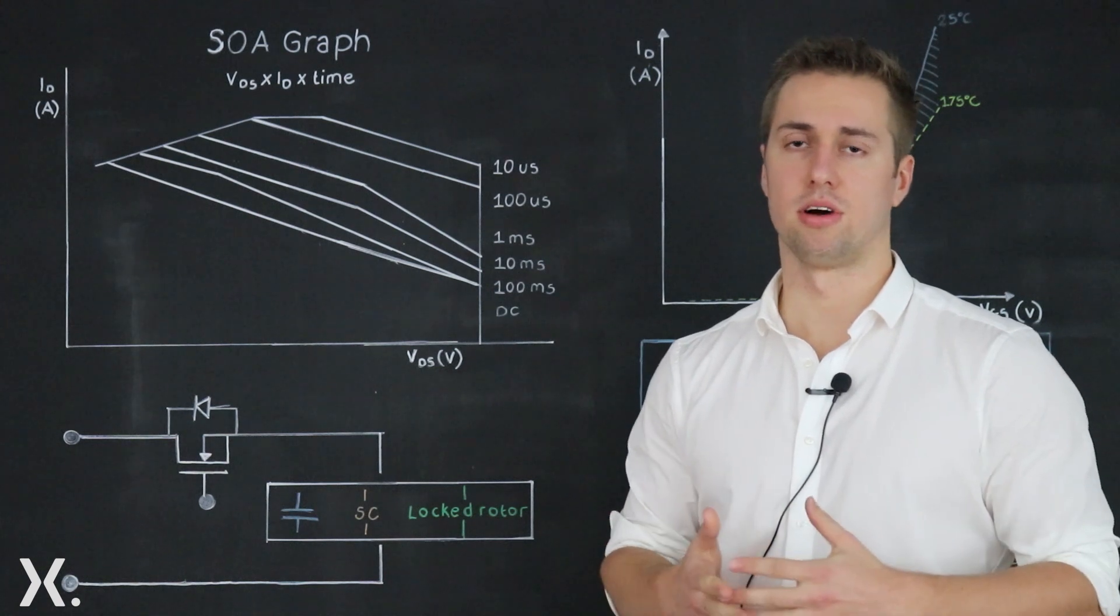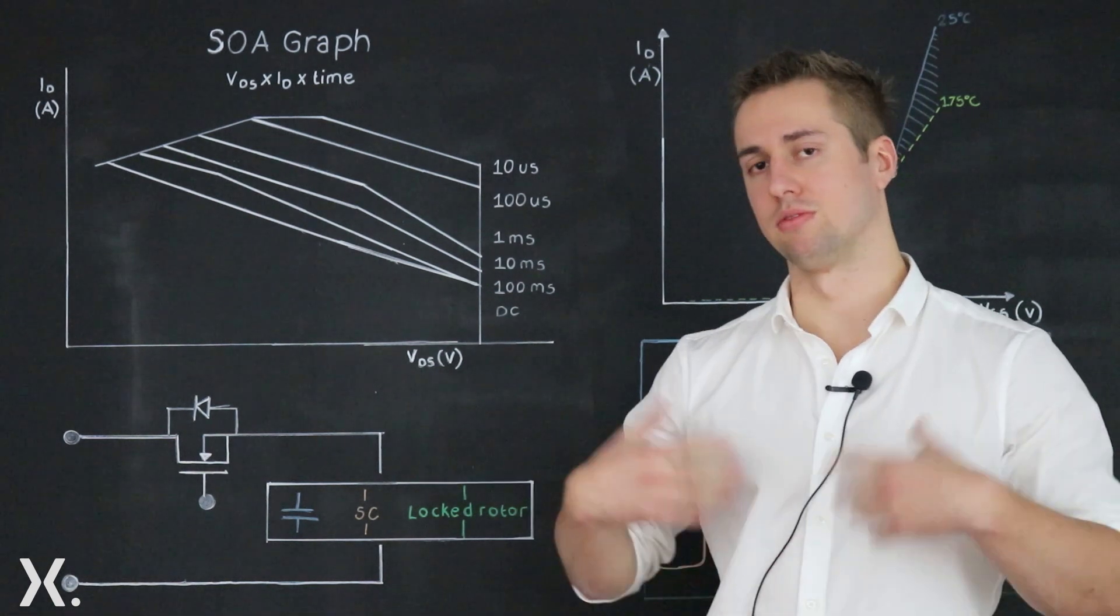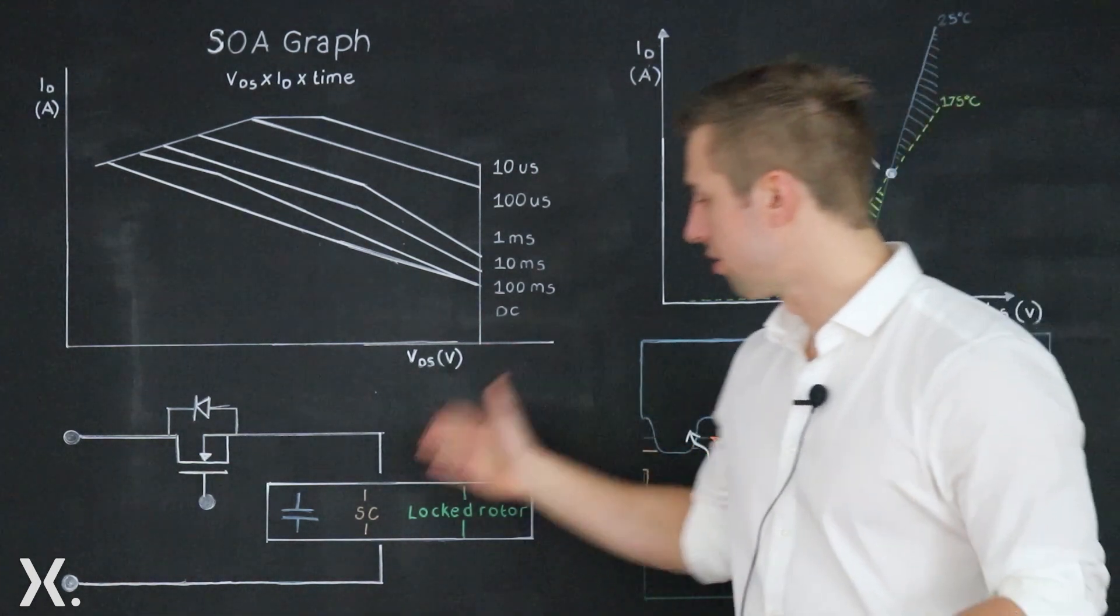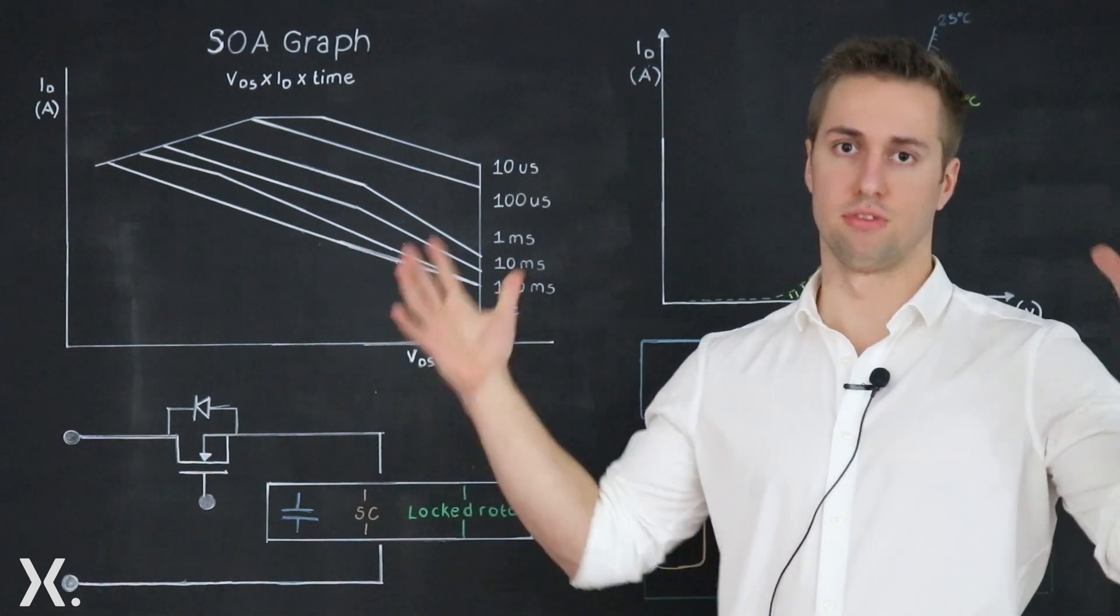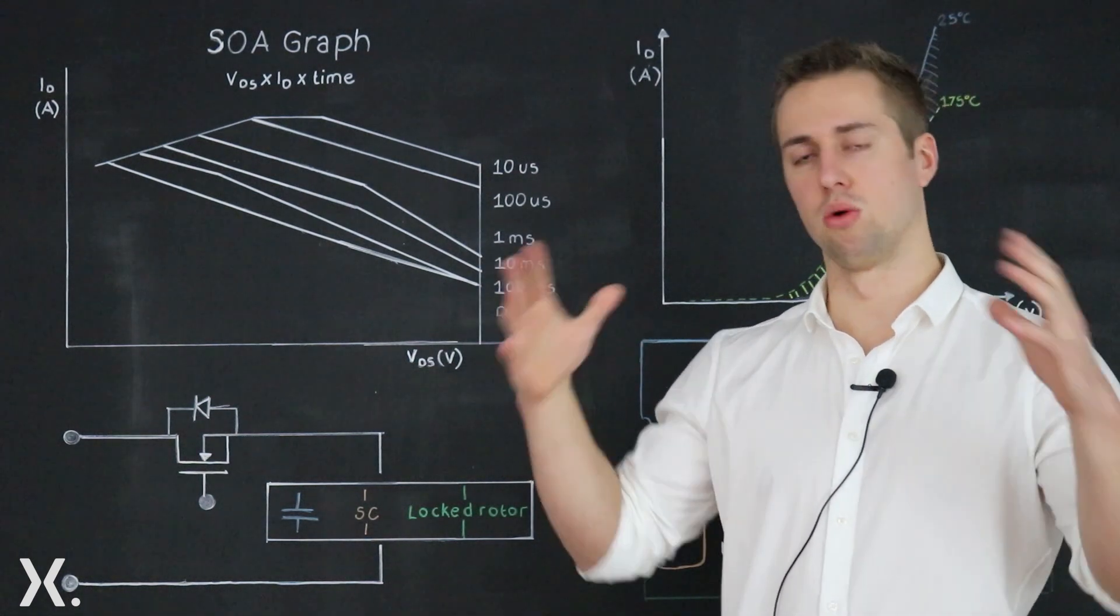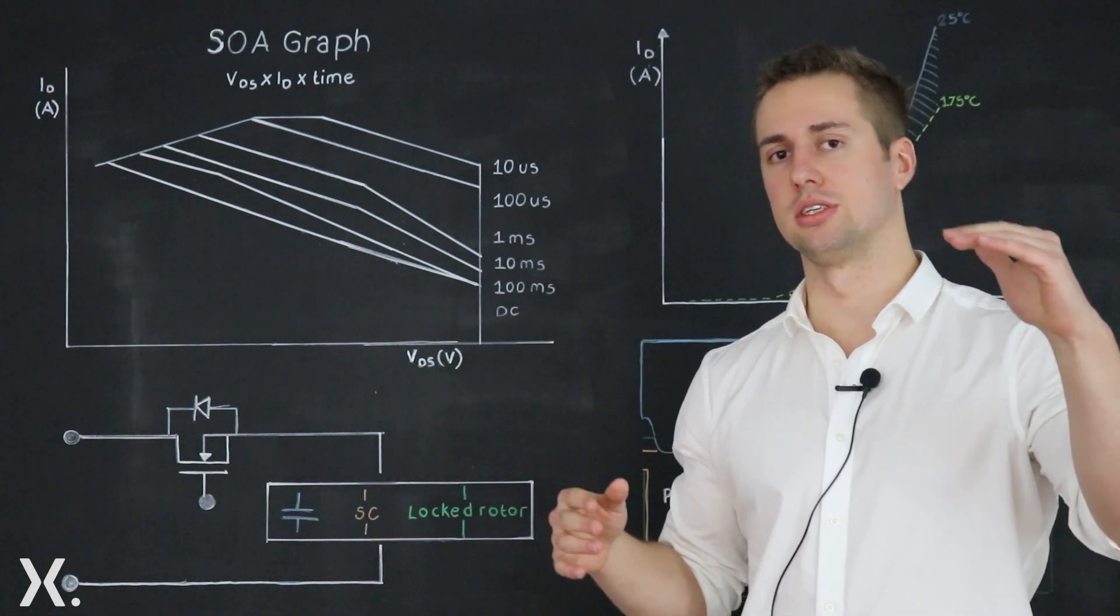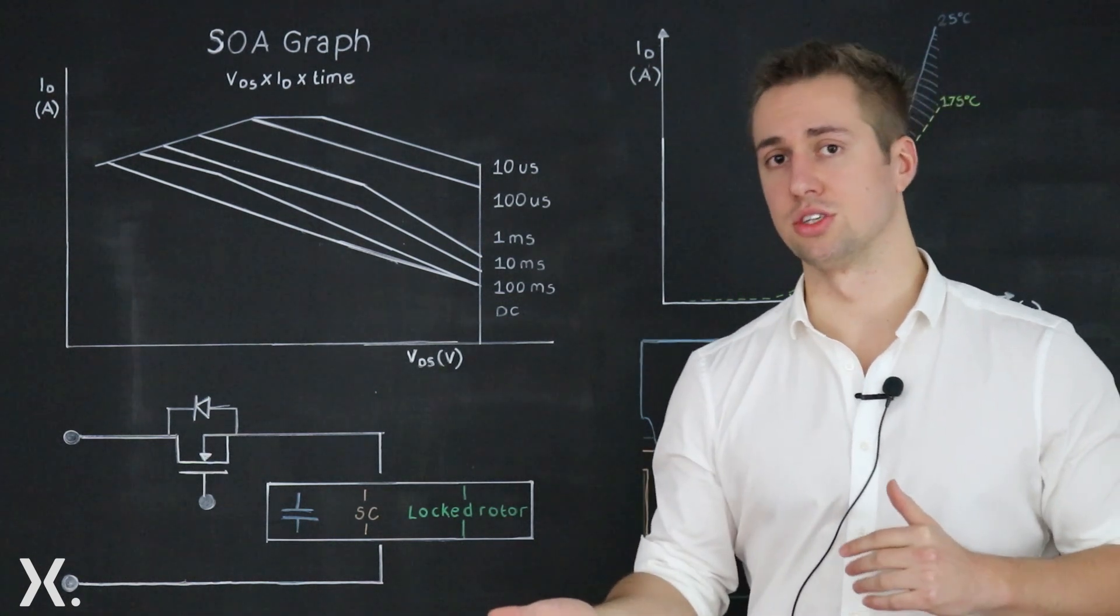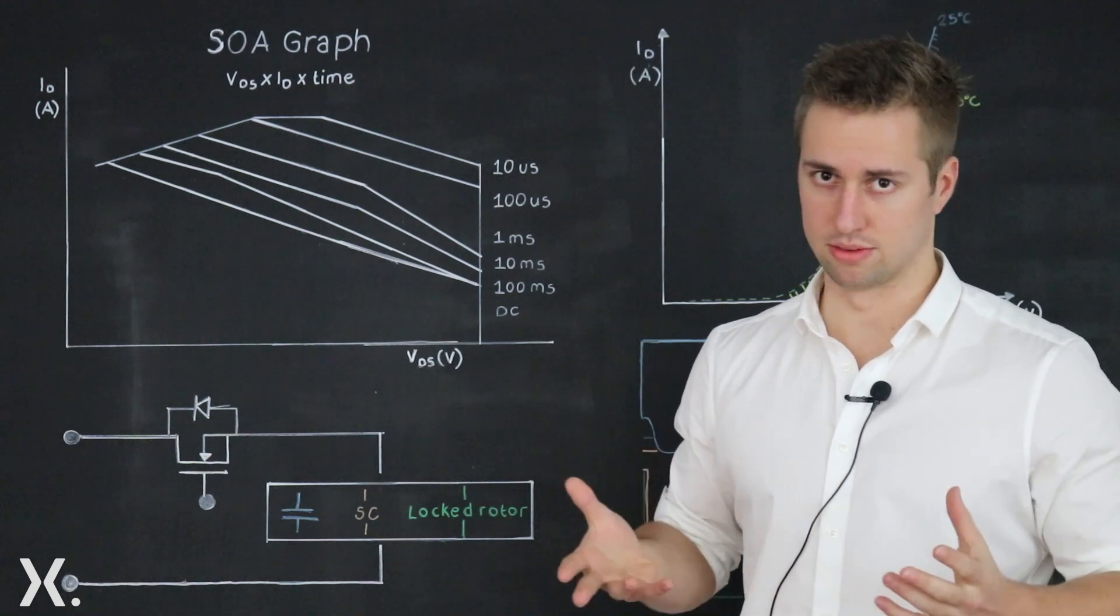Here the device is used to limit the amount of inrush current the system sees to protect it. Another application would be where you are turning off the system and the voltage rail is slowly collapsing. As it collapses the gate source voltage could follow and slowly transition through the linear region again making SOA relevant.